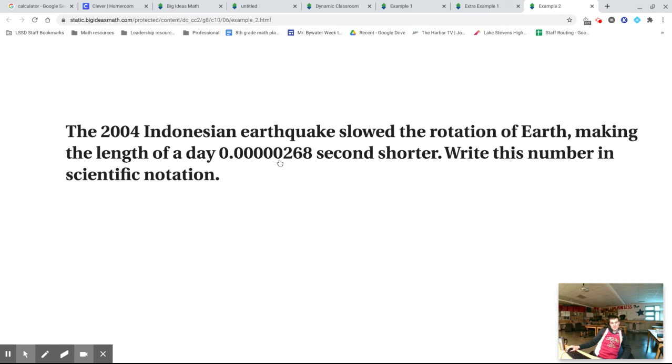I want to take that decimal and slide it all the way over after this first digit. But this time I need to slide it to the right. So I want this to be 2.68.